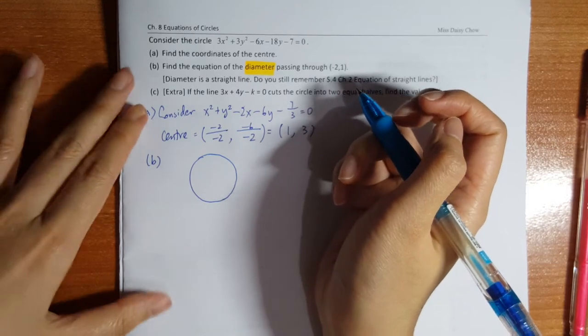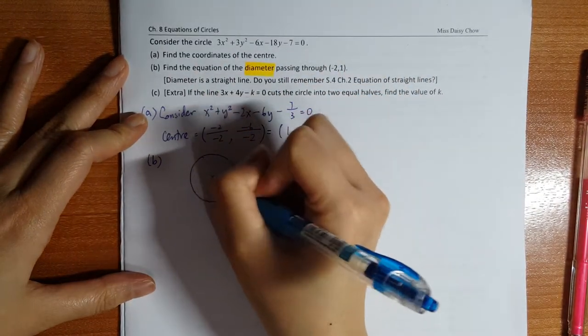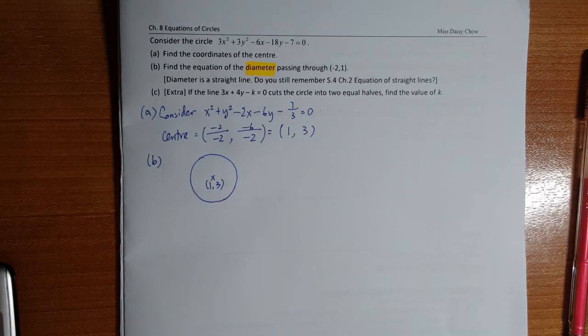So the point is, the center is 1, 3. And then the equations of the diameter passing through negative 2, 1. The question doesn't mention whether negative 2, 1 is on the circle,